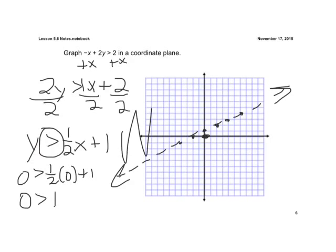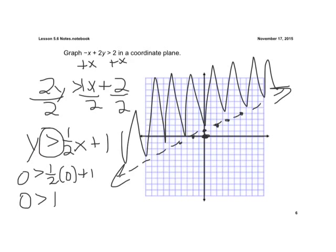So, we're going to shade away from our test point. If it was a solution, if that was true, we'd shade towards the origin. But since it's not, we're shading away from it.